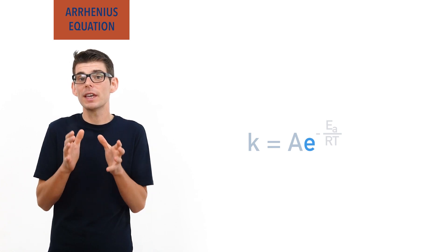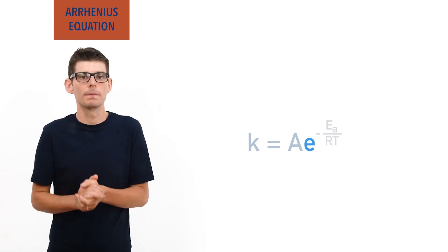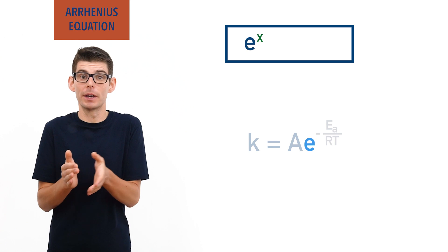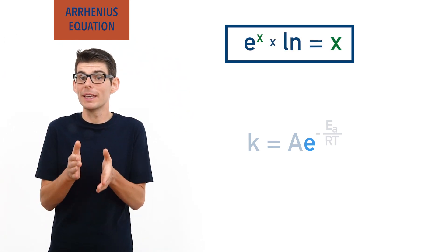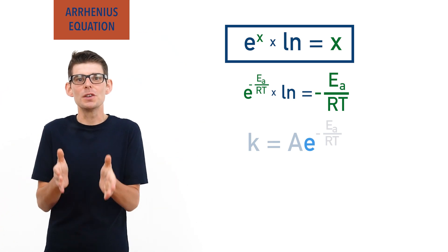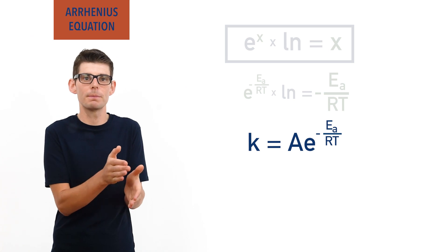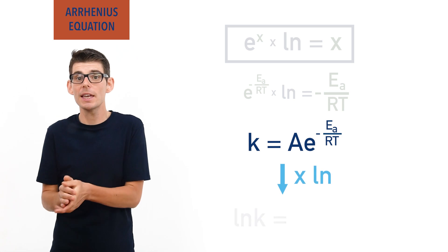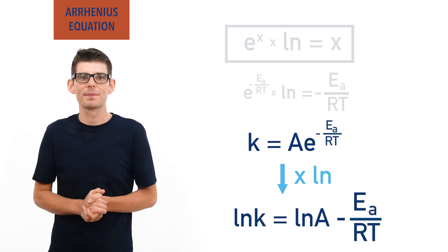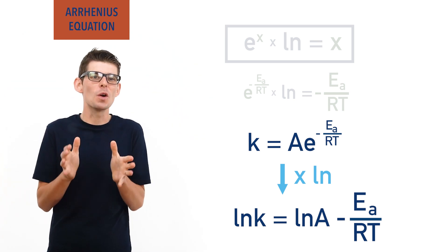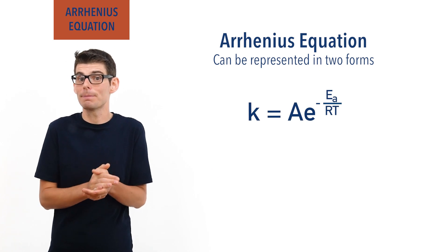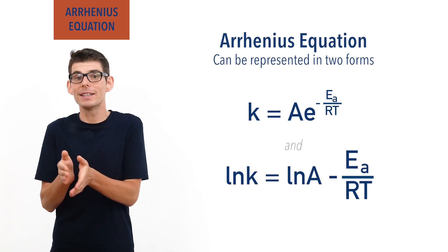It is this E part of the Arrhenius equation that makes it rather tricky to work with. To make things easier, we can get rid of E by taking natural logarithms, ln. Your calculator can do this if it has an ln button. When you take ln of e to the power x, it equals x. Meaning if we apply ln to e to the power minus Ea over RT, we get minus Ea over RT. To use this with the Arrhenius equation, we must apply ln to the whole equation, giving ln k equals ln A plus minus Ea over RT, which simplifies to ln k equals ln A minus Ea over RT.